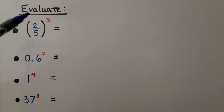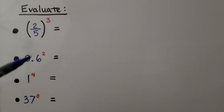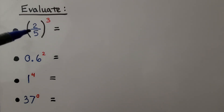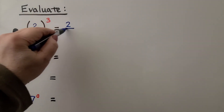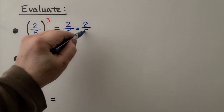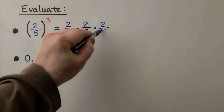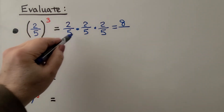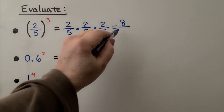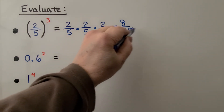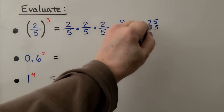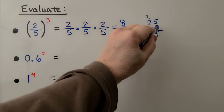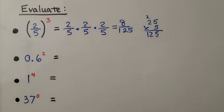Here we're told to evaluate these expressions — that means we need to find out what they equal. We have 2 fifths raised to the third power. Because it's inside parentheses, we're going to use 2 fifths as the factor 3 times: 2 fifths times 2 fifths times 2 fifths. 2 times 2 is 4, and 4 times 2 is 8. For the denominator: 5 times 5 is 25, and 25 times 5 is 125. So the answer is 8 over 125.